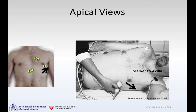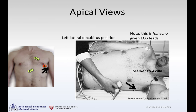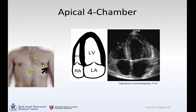For apical views, we've moved from up here down to the apex of the heart, with the marker off to the axilla rather than pointing off toward the shoulder. Note this is a full echo given the ECG leads present, and the patient is comfortably in the left lateral decubitus position. In the apical four-chamber view, you open up the left ventricle, left atrium, right ventricle, and right atrium. This is the inferior septum and anterior lateral wall.